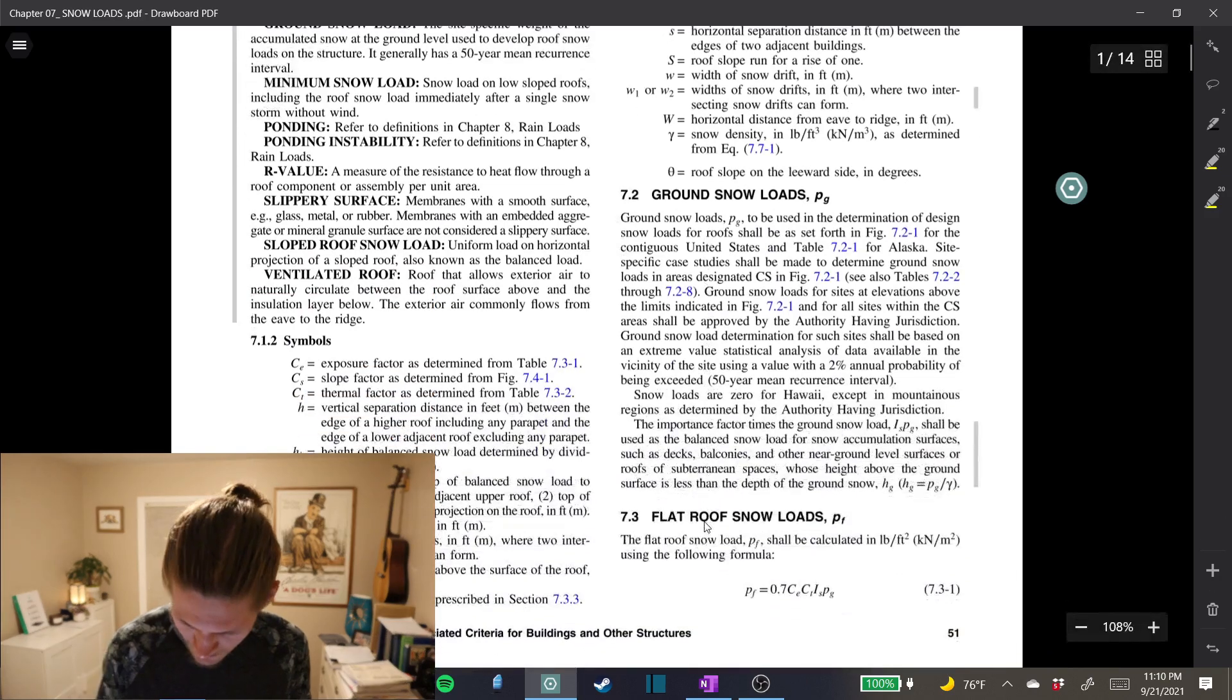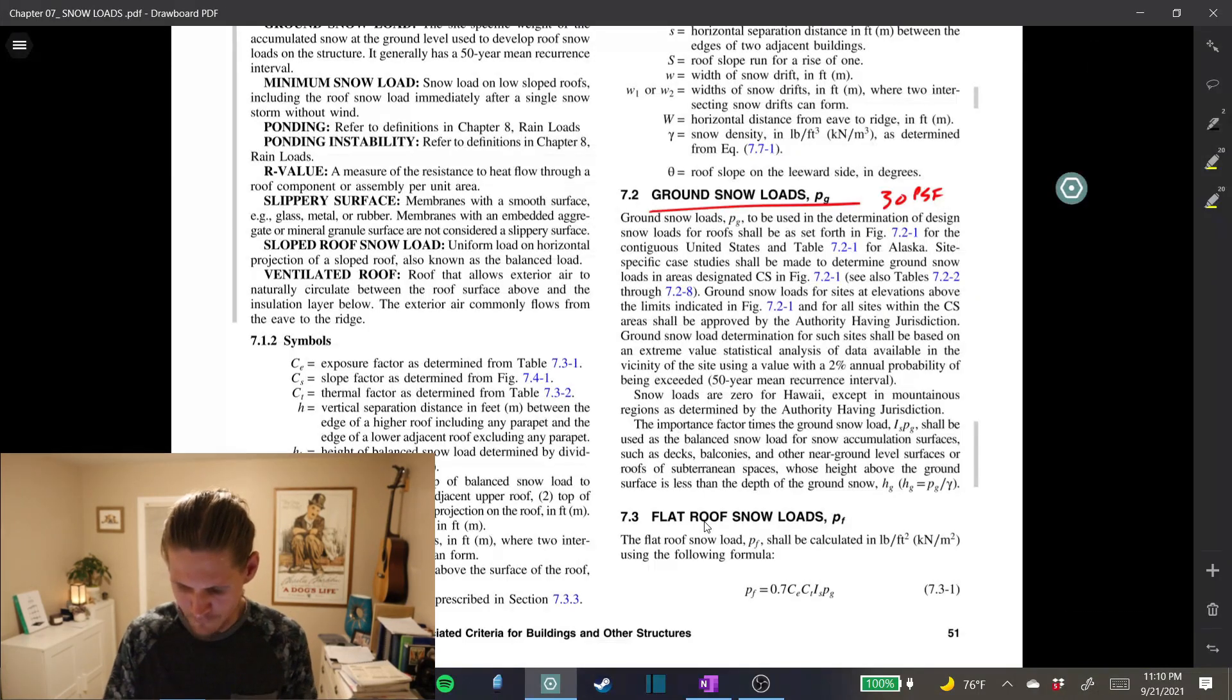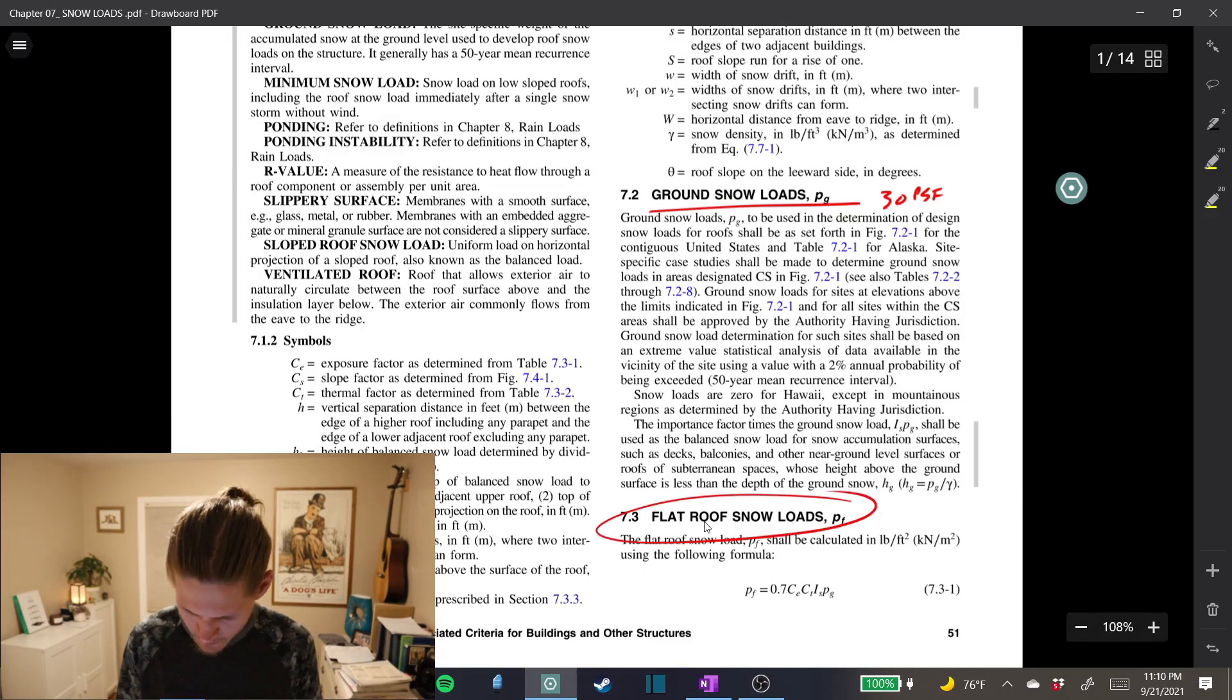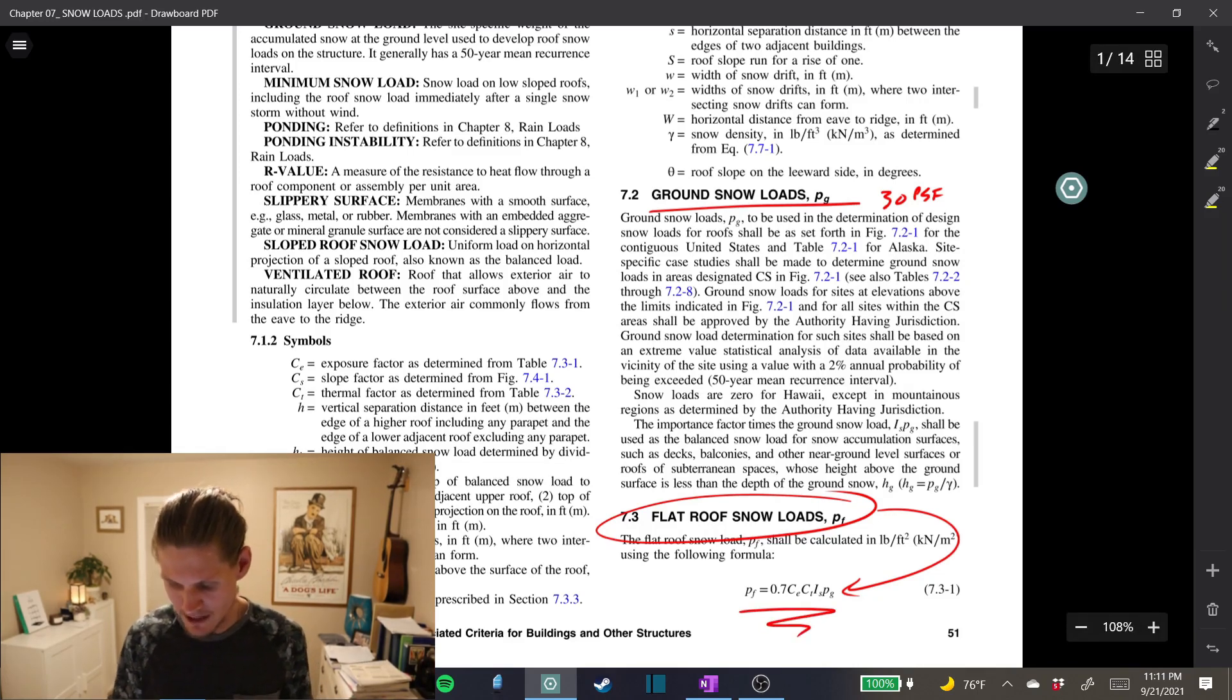Here we are. And if you scroll down on the first page here, you'll see ground snow load P sub G that was given to us. Remember it was 30 PSF and you'll see a flat roof snow load. So you'd think, we need this. And first off, let's knock this equation out to get us our flat roof snow load. And then from there, we'll work on drift, right? Well, hold the brakes. That's not actually the case for drift. They're actually only asking for the height of the drift itself. So that means we don't really need to find your design flat balanced roof snow load.